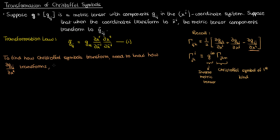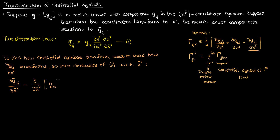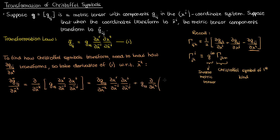How do we do that? Well, I take the transformation law for the rank 2 covariant metric tensor, and I differentiate that transformation law with respect to x super k bar, and that'll give me the transformation law for the partial of the metric tensor component with respect to the coordinate. This is already looking pretty algebraically cumbersome, but let's continue by applying the product rule to the expression on the right-hand side and grouping the last two derivatives together.